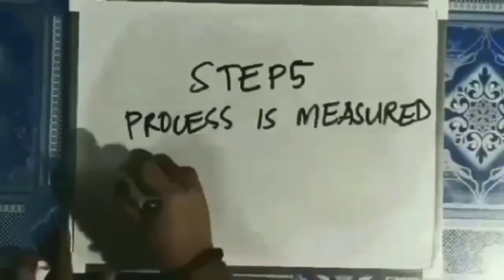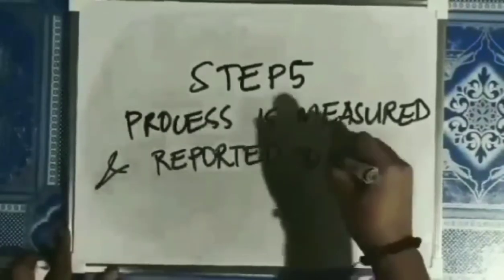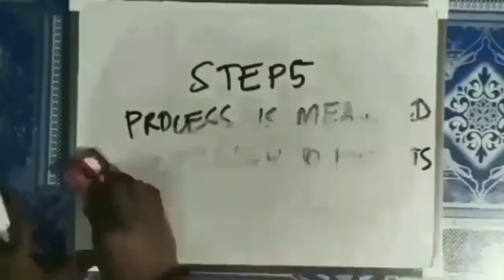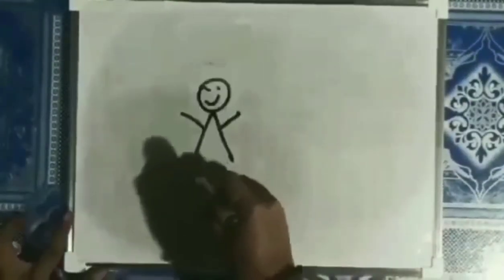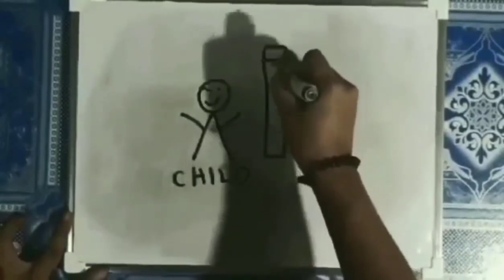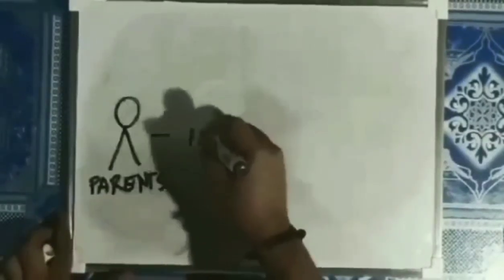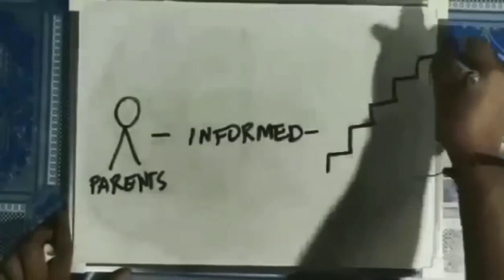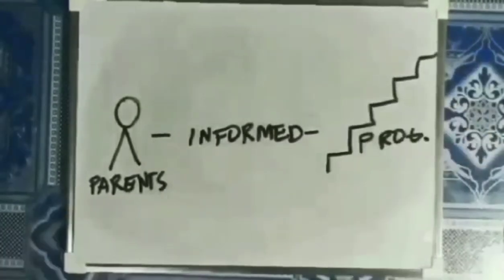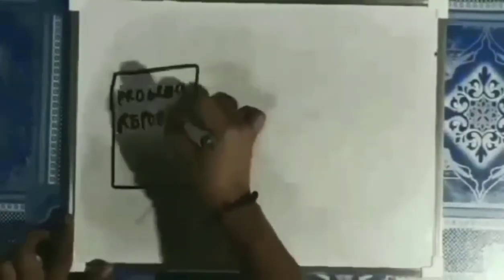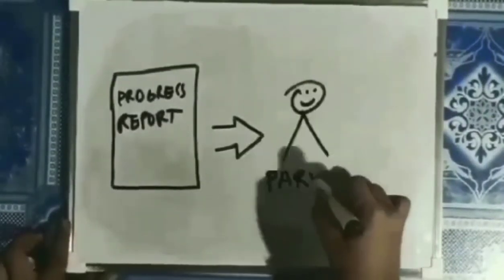Step 5: Progress is measured and reported to parents. The child's progress toward the annual goals is measured as stated in the IEP. Parents are regularly informed of their child's progress and whether that progress is enough for the child to achieve the goals by the end of the year. Progress reports must be provided to parents.